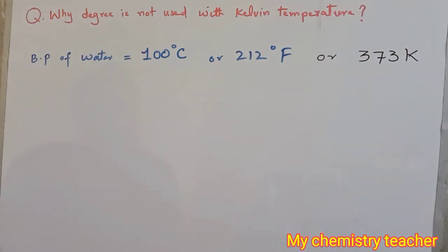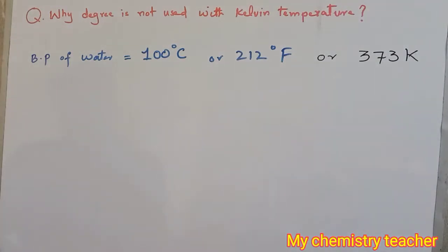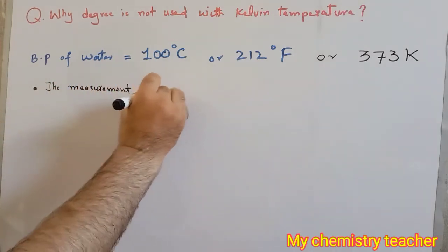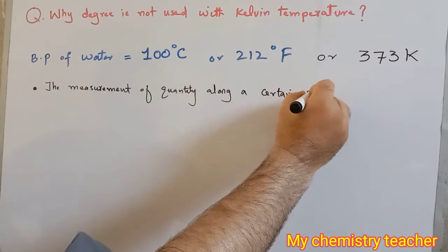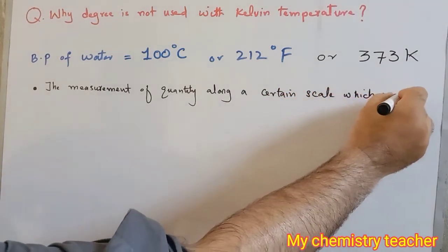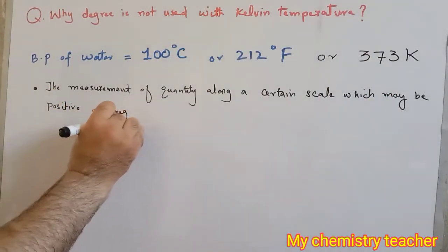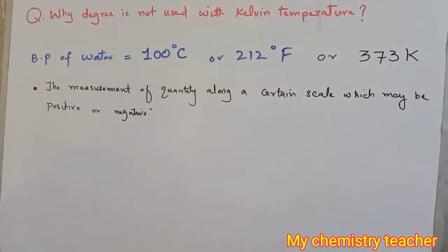To answer this question we have three reasons. Reason number one: degree is defined as the measurement of a quantity along a certain scale which may be positive or negative. This is the definition of degree — it is the measurement of a quantity along a certain scale whose values may come out to be positive and negative.